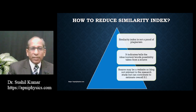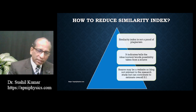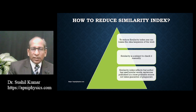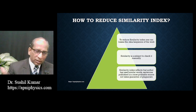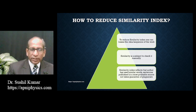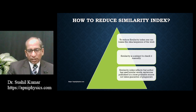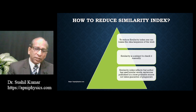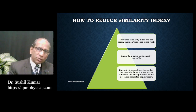We have to understand that similarity index and plagiarism are different things, and we must not challenge the genuinity of many researchers based on similarity index alone. We have to make an awareness that these practices are wrong and we have to improve. By trying to reduce similarity index, one can lose the idea and sequence of work by using illegal practices. Similarity is a subject to check manually — through an expert person of the department.